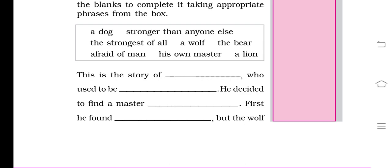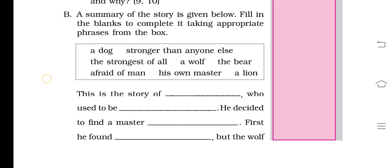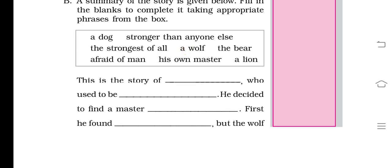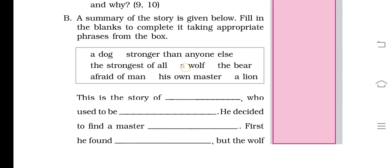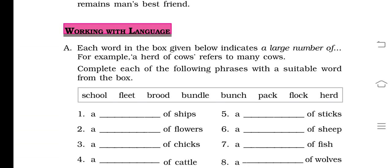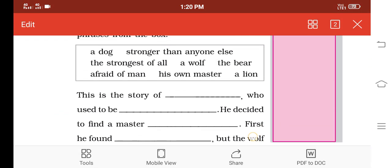Question number B: A summary of the story is given below. Summary means the story is made shorter. Fill in the blanks to complete it, taking appropriate phrases from the box. There are so many phrases and words. Choose from the box and fill up the story.